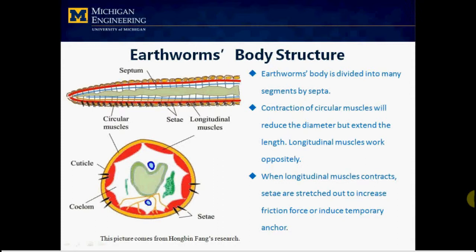Another important component of the Earthworm is the seta. When longitudinal muscles contract, the seta will be stretched out to contact the environment, increasing the friction force between the body and the environment.